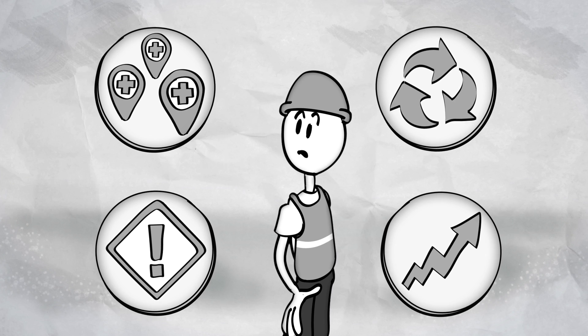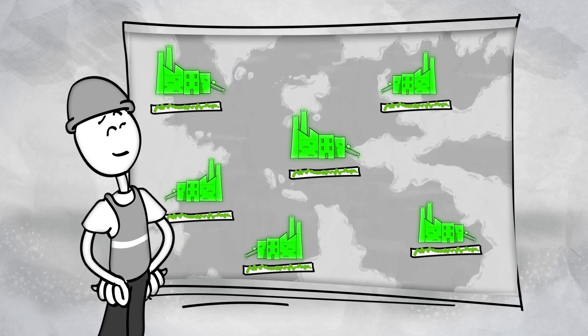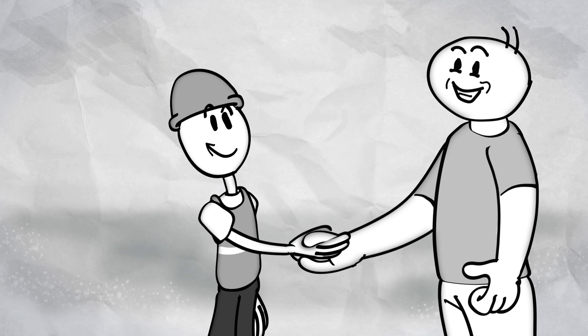So Bob can avoid unplanned downtime, which means Bob has happy clients, which means Bob is happy.